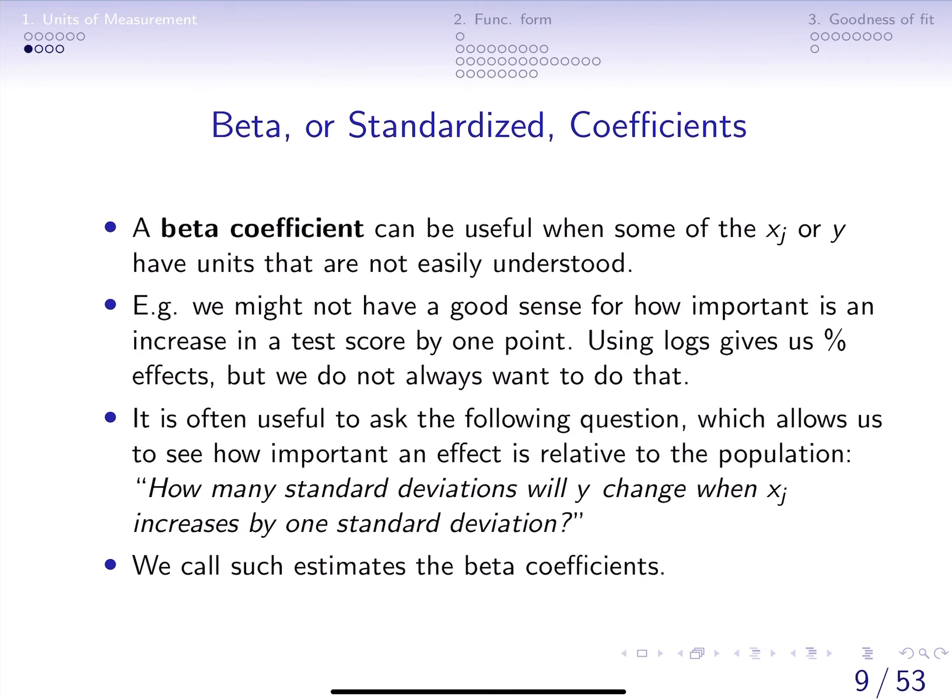For example, if we were looking at the effects of test scores on wages or salaries, you might encounter different denominators for test scores. The test score could be measured on a scale of 40 or 140 or 1400, and it would be very difficult for us to assess what would be the effect on salaries or wages if test scores were 10 points higher or 20 points higher.